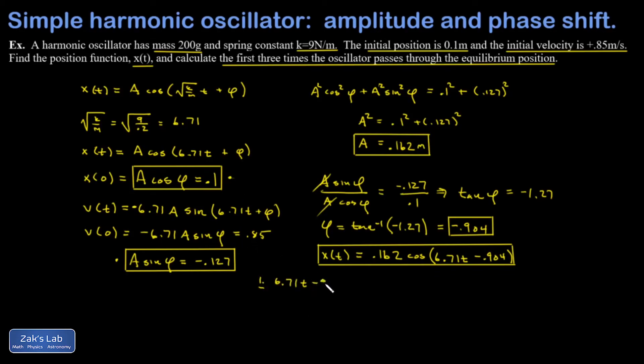There's the argument of the cosine function. When that's equal to π/2, the cosine vanishes. I solve for t real quick. And my first approximate time, I'll just round to two sig figs on this, 0.37 seconds.